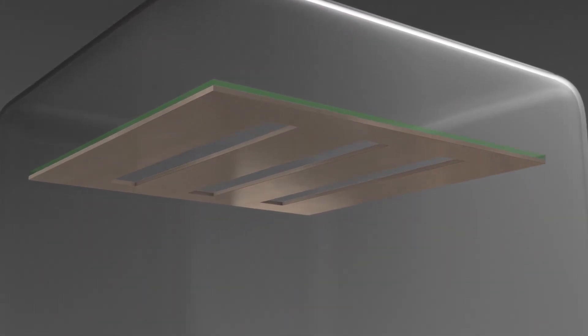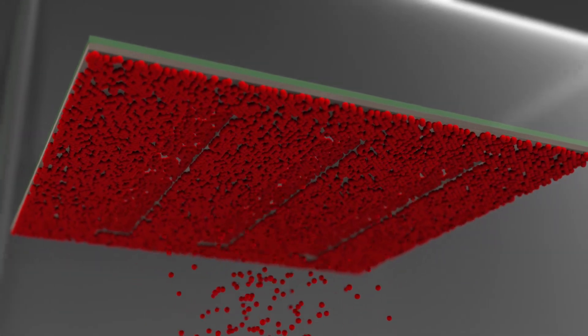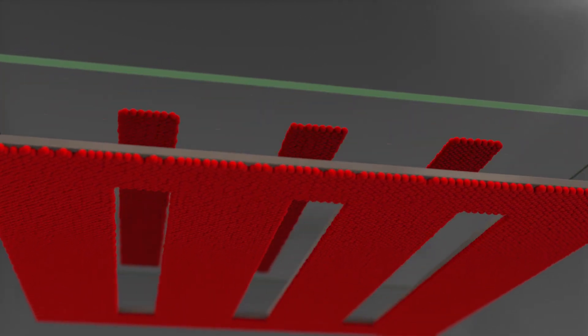At this time, in the OLED deposition process, RGB patterning is performed using deposition masks that deposit only to specific areas.